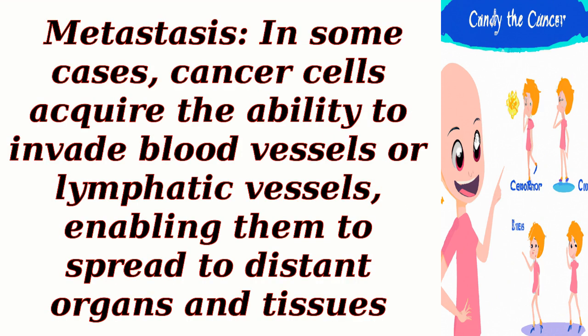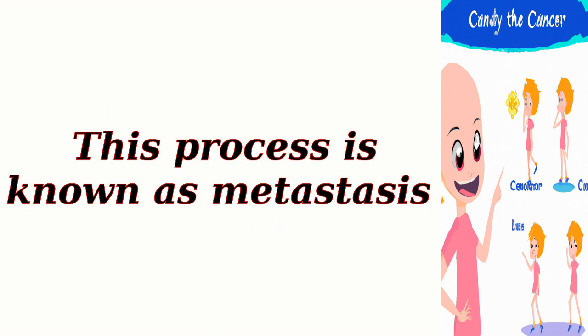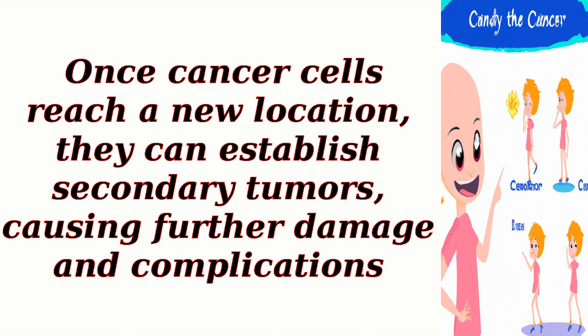In some cases, cancer cells acquire the ability to invade blood vessels or lymphatic vessels, enabling them to spread to distant organs and tissues. This process is known as metastasis. Once cancer cells reach a new location, they can establish secondary tumors, causing further damage and complications.